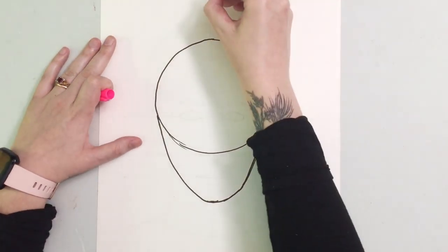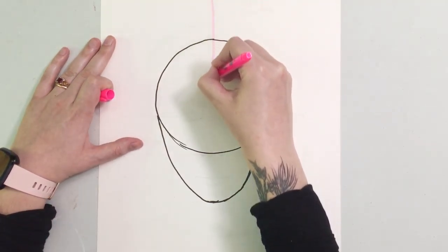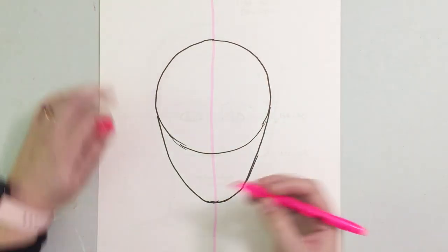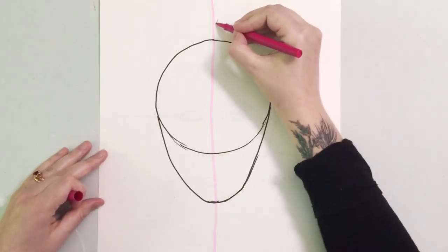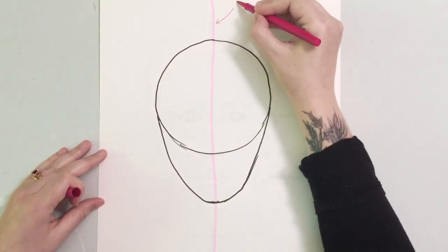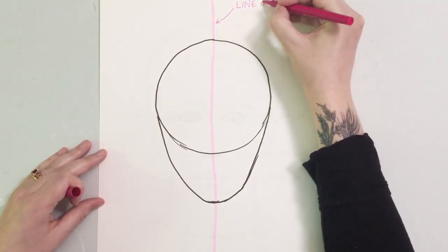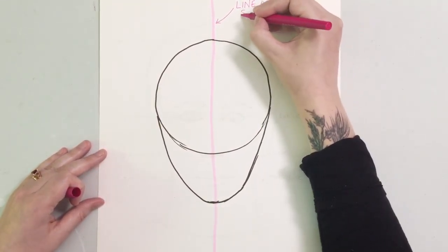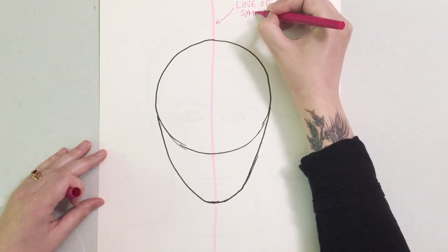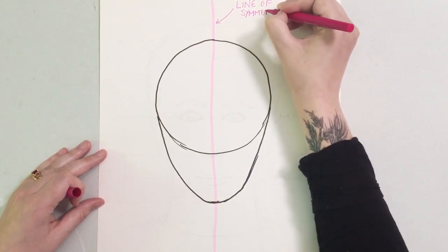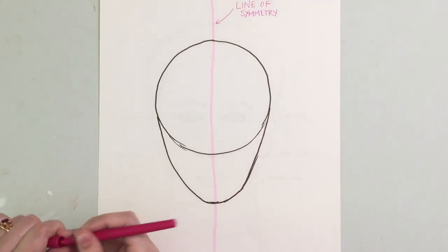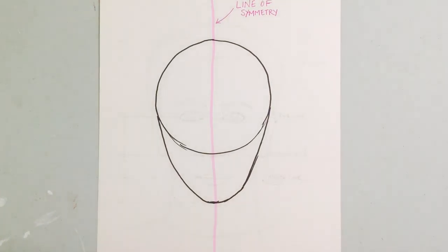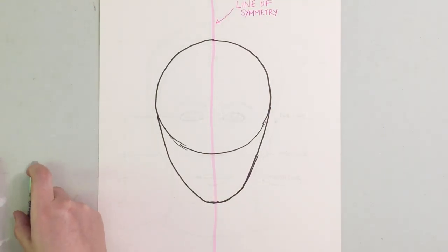My hand is about the same size as my face. Now I'm getting ready to draw what artists call the line of symmetry. Symmetry is when both sides match. This line isn't really on the face, but I'm going to use it as a pretend ruler to get my proportions. I'm using a different color — everything in pink is going to be erased. I'm splitting my face in half with this line.